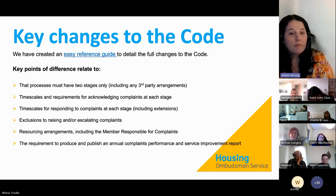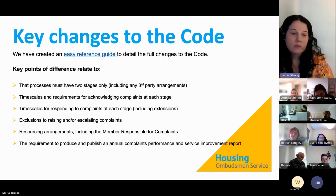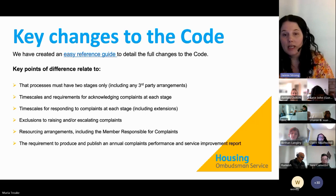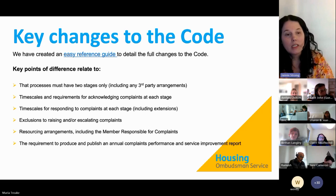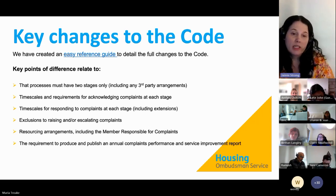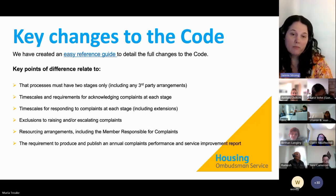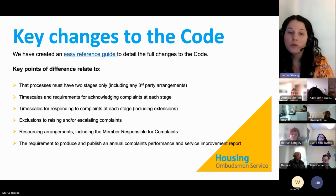The code also covers exclusions to raising or escalating complaints. One of the biggest changes is that a resident now has 12 months to bring their complaint to the landlord — up from six months — from the date they became aware of the issue or when the issue took place. The code also talks about resourcing arrangements, including the requirement to have a member responsible for complaints. There's a dedicated section on our website about that role.